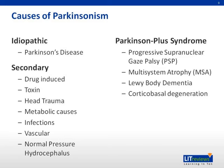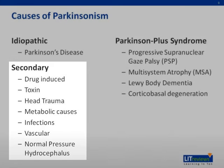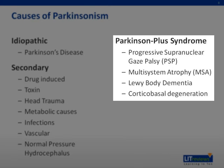The symptoms and signs of Parkinsonism can be caused by a variety of causes. Idiopathic Parkinsonism is referred to as Parkinson's disease. Secondary causes include drugs like antipsychotics and dopamine antagonists, toxins such as MPTP and organic solvents, head trauma, metabolic causes like Wilson's disease and neuroacanthocytosis, certain infections like progressive multifocal leukoencephalopathy and encephalitis lethargica, and normal pressure hydrocephalus. Vascular Parkinsonism relates to multiple cerebral vascular events. Parkinson's plus syndromes include progressive supranuclear gaze palsy, multisystem atrophy, Lewy body dementia, and corticobasal degeneration.